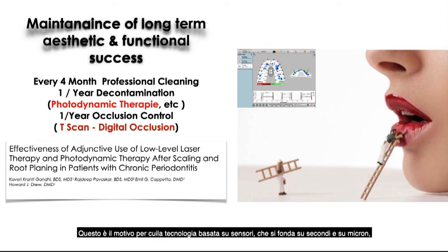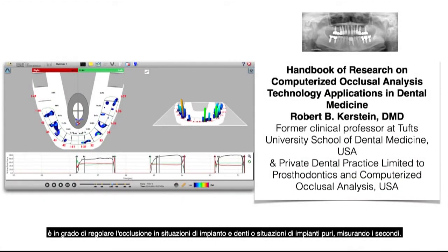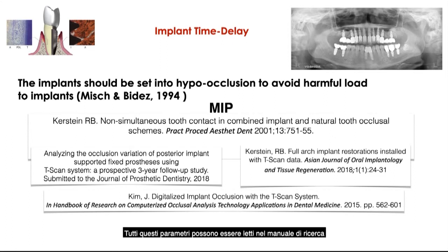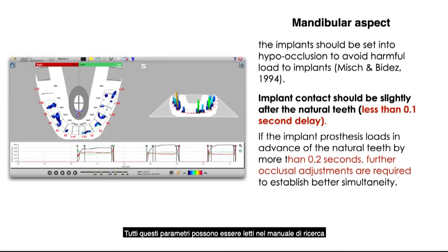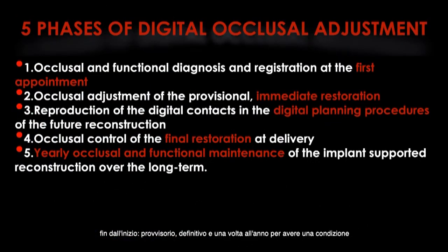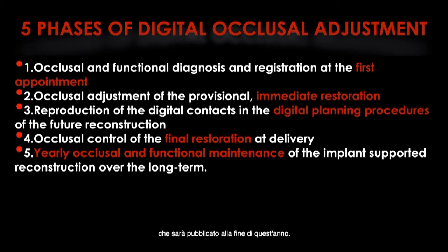Based on seconds and microns, sensor-based technology adjusts occlusion in implant-and-teeth situations by implant time delay, or in pure implant situations by measurement by seconds. All these parameters can be read in the Handbook of Research and Clinical Application of Computerized Occlusal Analysis in Dental Medicine. Occlusal adjustment must be done at all stages of the restoration — from provisional to final and once a year — to fulfill one of the conditions for long-term maintenance. This is one subject of a multicenter study to be published at the end of this year.